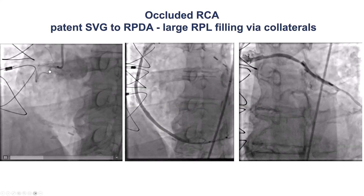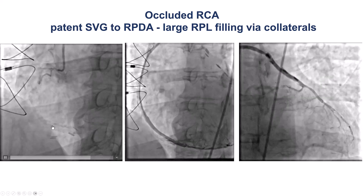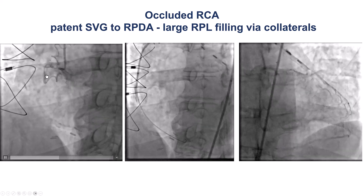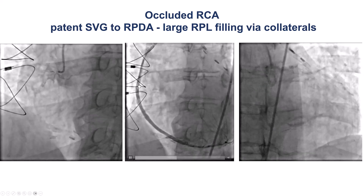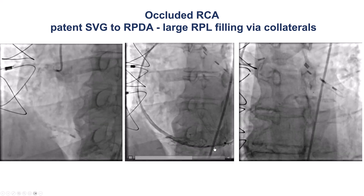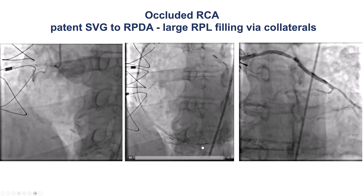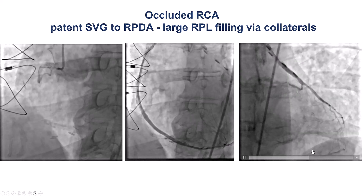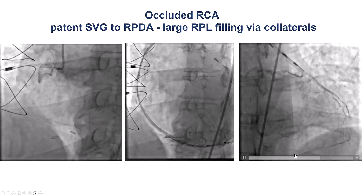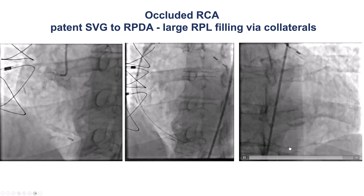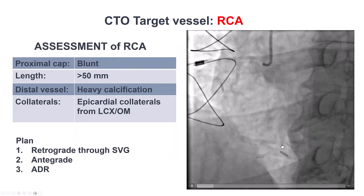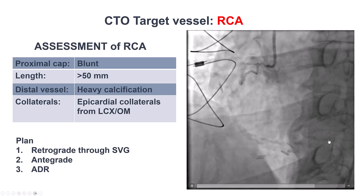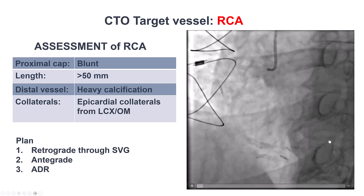On coronary angiography, there is heavy calcification of the right coronary artery with a proximal right coronary CTO and a patent saphenous vein graft supplying the PDA. However, there was a sizable right posterolateral branch that was filling through epicardial collaterals from the left. So the target was to open the right posterolateral branch.